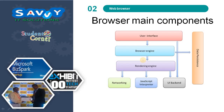This is a typical diagram showing the components available in the web browser: user interface, browser engine, rendering engine, data persistence, networking, JavaScript interpreter, and UI backend. The user interface consists of the address bar, home button, back and forward button, refresh button, and stop button.